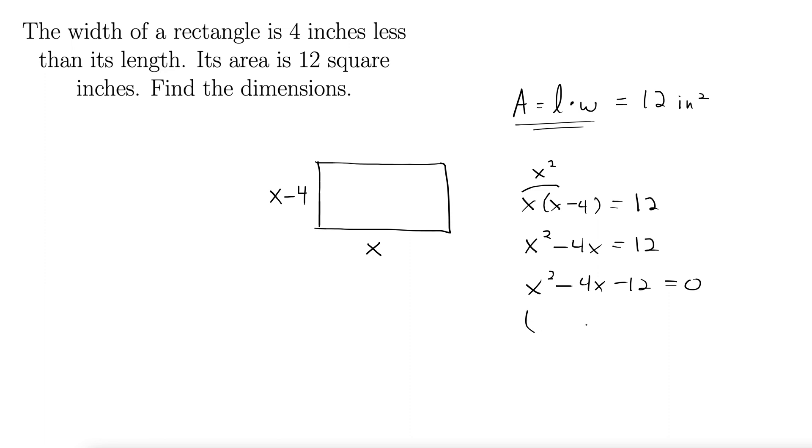Alright, this one factors. So here we go. Here's our c term, here's our b term, and we want to find factors of c that add up to b. So I'm looking for ways to factor negative 12 that add to negative 4. I'm thinking 6 and 2 look good. Let's do minus 6 plus 2. Note that when we multiply those together, we get negative 12. When we add these two together, we get negative 4.